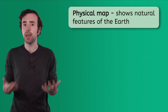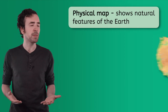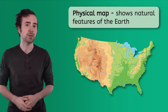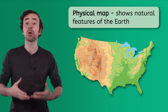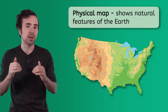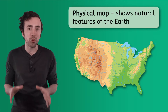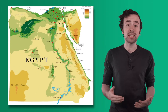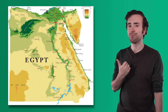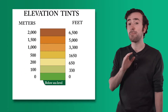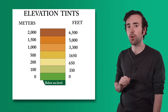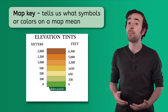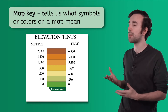A physical map shows landforms like mountains and rivers. Do you see the colors on this map of the US? The colors are there to give us information. This side is brown and that's because it has more mountains and the land is at a higher elevation. And this side is so green — that means that area is at a lower elevation. You could see those colors again here on this map of Egypt. We know what the colors on the map mean because this guide in the upper right corner tells us. The guide is called a map key. You might remember from a previous lesson that map keys tell us all about what the symbols on a map mean.